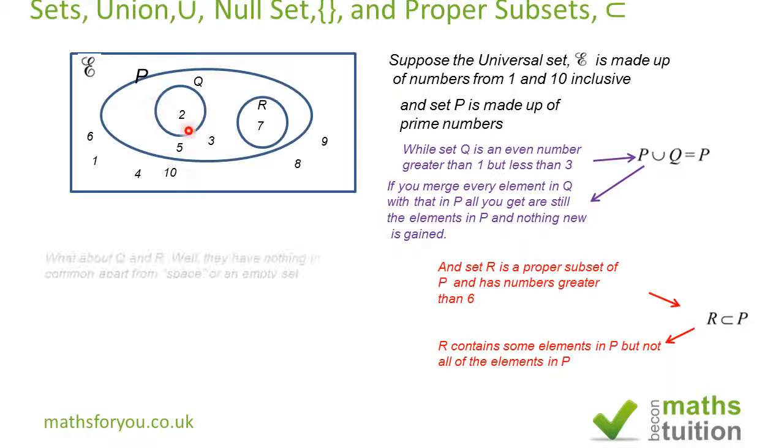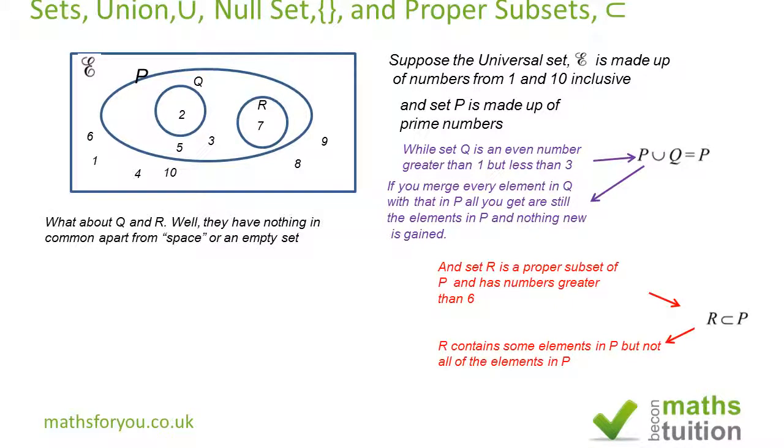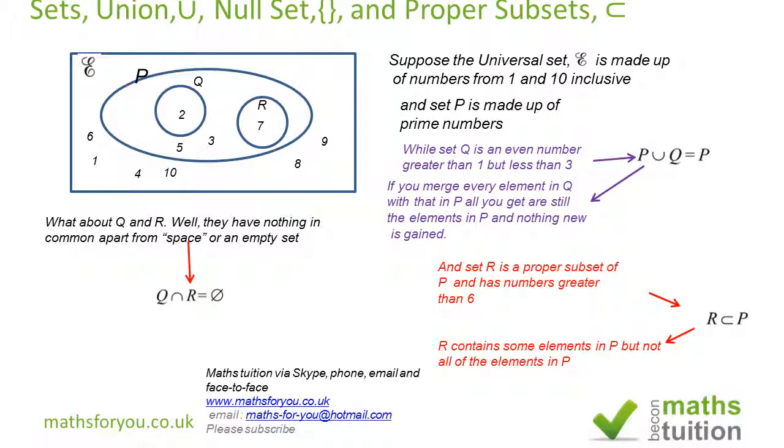Now, what about the relationship between Q and R? Well, there's nothing in common because Q intersection R will give you nothing - it's an empty space. So we can write that as Q intersection R equals the null set.